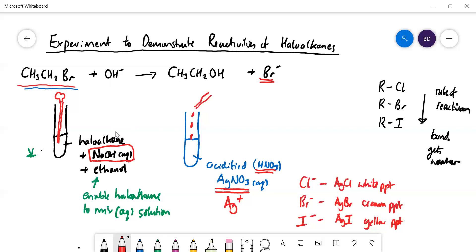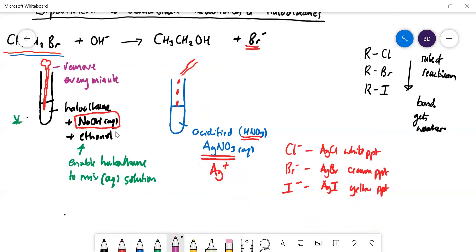So you're testing to see how long it takes for a precipitate to form. You're going to remove drops every minute and time how long it takes for a precipitate to form. Which one should form the precipitate most quickly? It should be the silver iodide because that undergoes nucleophilic substitution the most quickly.